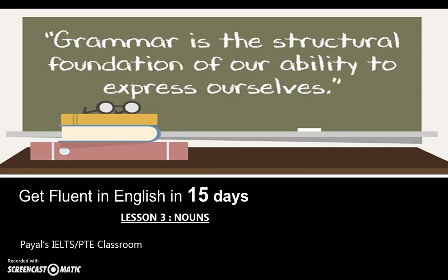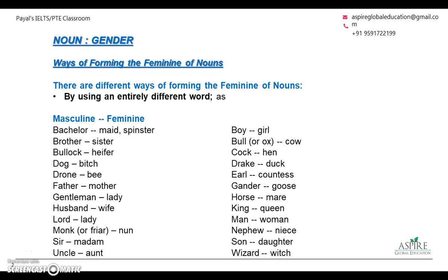Hello everyone, let's get started with the third lesson, which is a continuation of nouns. One of the most important aspects of a noun is gender. Whenever we use nouns in a sentence, we have to be sure about the noun form — whether it is the masculine form or the feminine form.